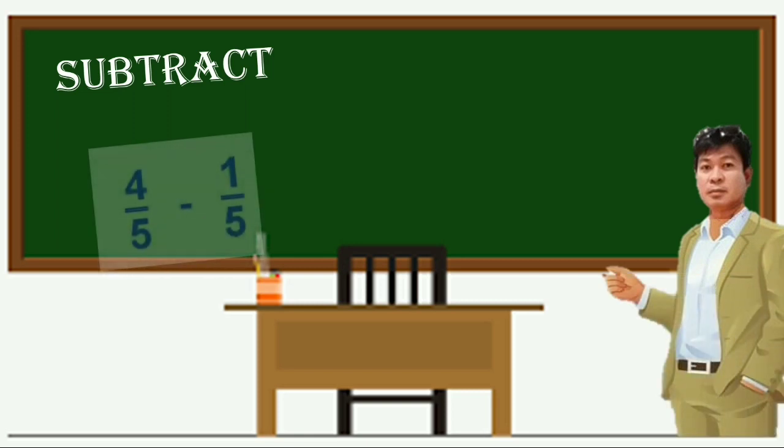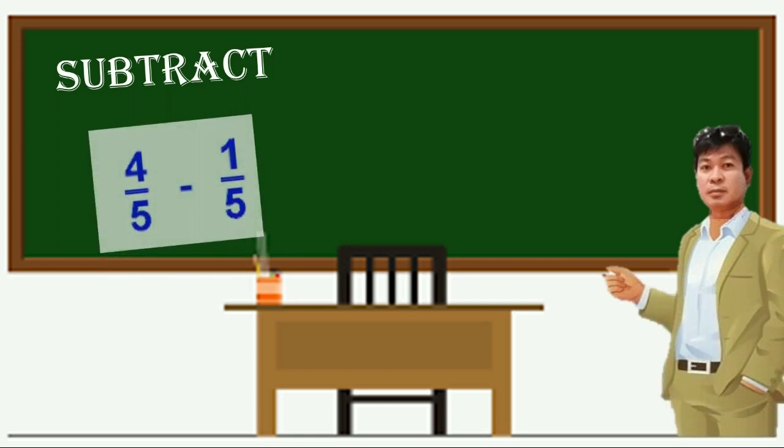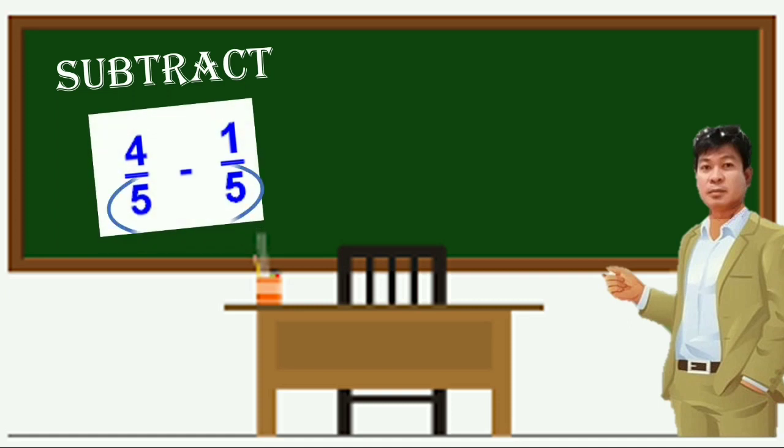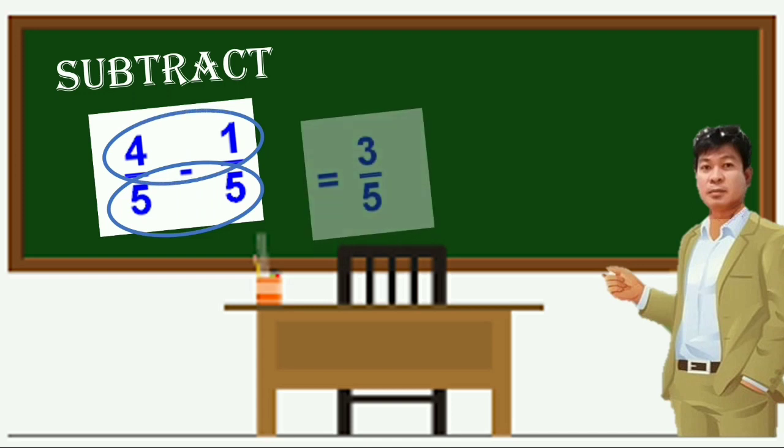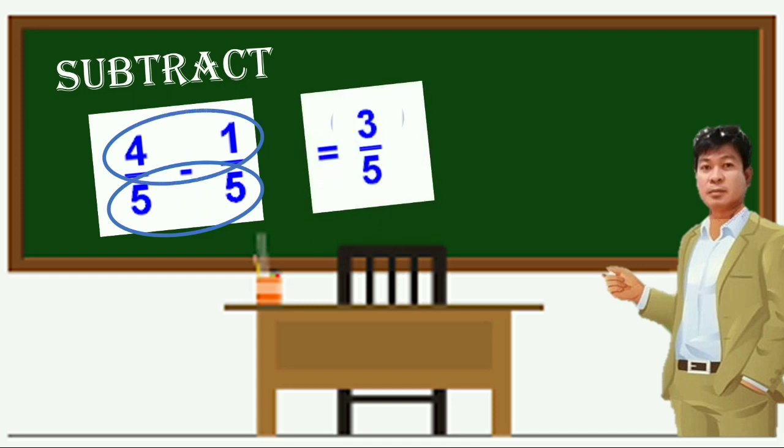Another example, 4/5 minus 1/5. So again, we have the same denominator. So all we have to do is subtract the numerator. 4 minus 1 is 3. And then copy the denominator which is 5.